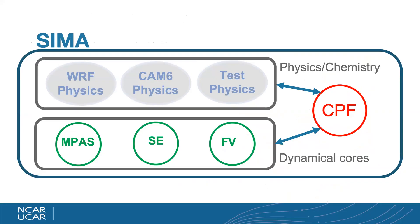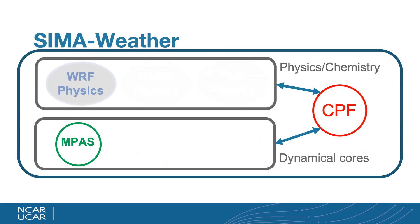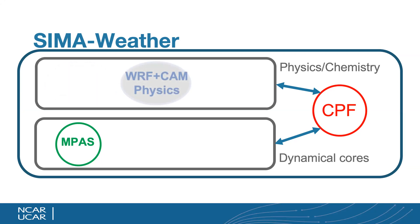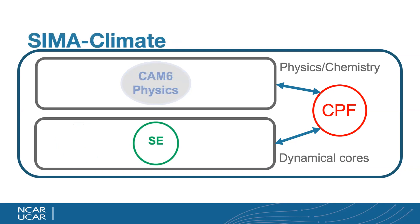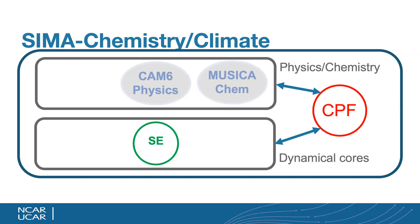SEMA is a set of interoperable components — dynamical cores and physics and chemistry — with a common interface to the rest of the modeling. A SEMA weather model might have physics very similar to WARF with a non-hydrostatic MPAS dynamical core, or a version with more CAM-type physics for running coupled. A SEMA climate model version would look similar to CAM with CAM6 physics and a spectral element hydrostatic dynamical core, or you could put WARF physics in with that spectral element dynamical core for physics more appropriate for the mesoscale at higher resolution. You could also have a chemistry climate model with CAM6 physics, a spectral element dynamical core, and MUSICA chemistry.